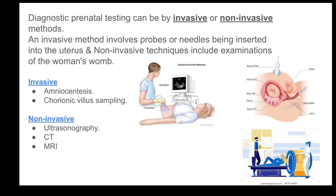An invasive method involves probes or a needle being inserted into the uterus, while non-invasive techniques include examination of the womb. Examples of invasive methods include amniocentesis and chorionic villus sampling. An example of a non-invasive method is ultrasonography.